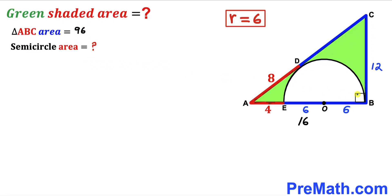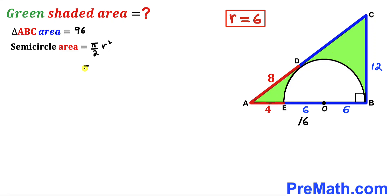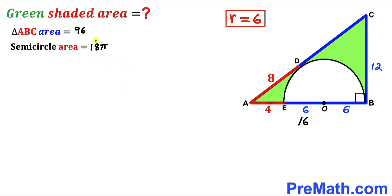Now we calculate the area of the semi-circle. The area of a full circle is πr², where r is the radius. Our radius r is 6. So the semi-circle area = π/2 × r² = π/2 × 36 = 18π square units.